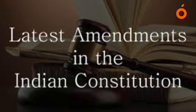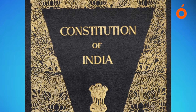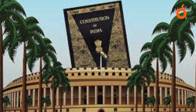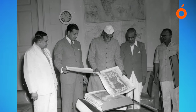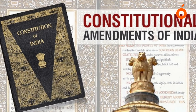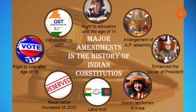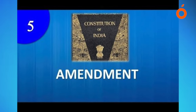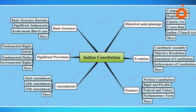The provisions which can be amended by special majority include fundamental rights, directive principles of state policy, and all other provisions not covered by the simple majority or the third category. Those provisions related to the fundamental structure of the polity can be amended by a special majority of parliament along with the consent of half of the state legislatures by a simple majority. There is no time limit within which states must give their consent. The provisions amendable in this way include: election of the President and its manner; extent of executive power of the Union and states; Supreme Court and High Courts; distribution of legislative powers between Union and states; any list in the Seventh Schedule; representation of states in parliament; and the power of parliament to amend the constitution and its procedure under Article 368 itself.